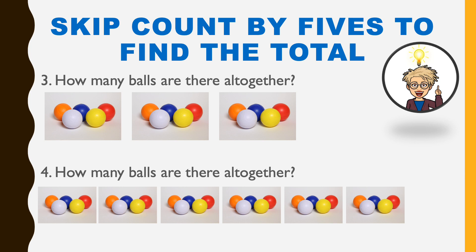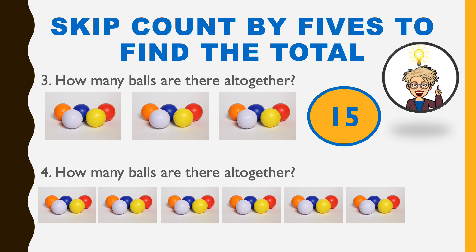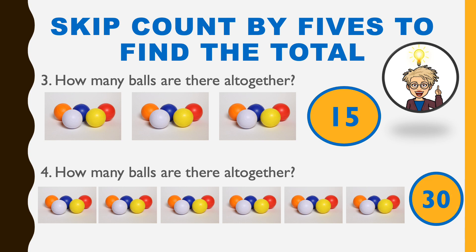Hey everybody, I'm back. Let's look at number three together. If we're skip counting in fives, that means we're going to count each group of balls together. Are you ready? 5, 10, 15. I hope you got 15 when you skip counted in fives. Let's look at number four now. 5, 10, 15, 20, 25, 30. Did you get 30 when you skip counted in fives all by yourself?